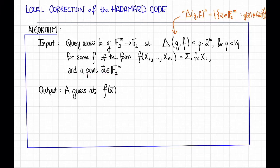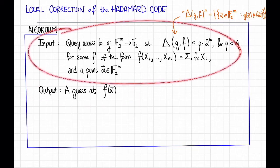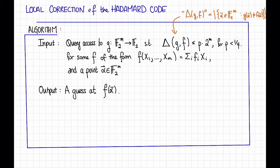Our output is supposed to be some guess at f(α). And we're going to want this guess to be correct with reasonably high probability. If it isn't clear to you at this point why producing an output like this, given an input like this, is the same problem as locally correcting the Hadamard code, pause the video and go back to the various definitions until it becomes clear.